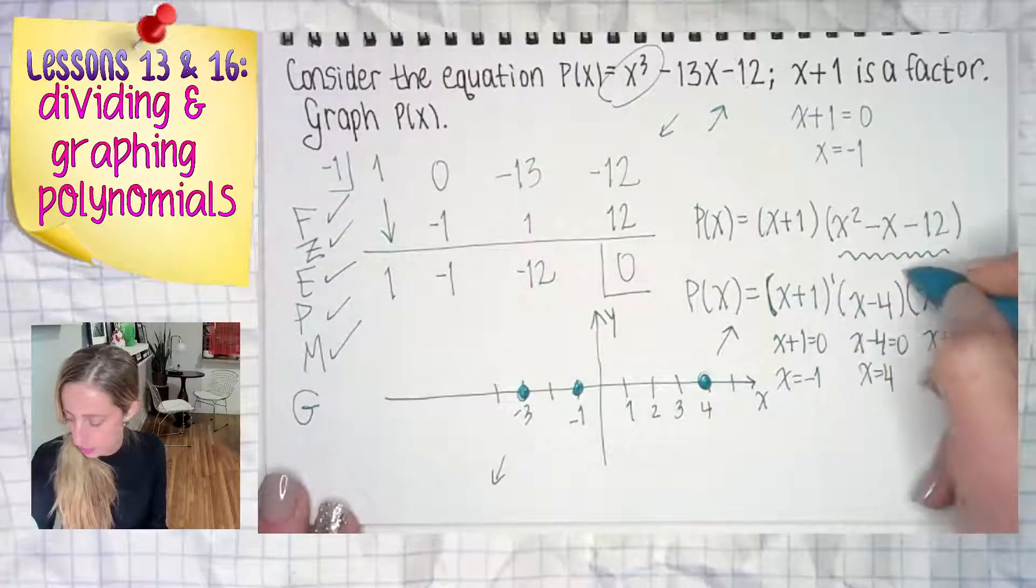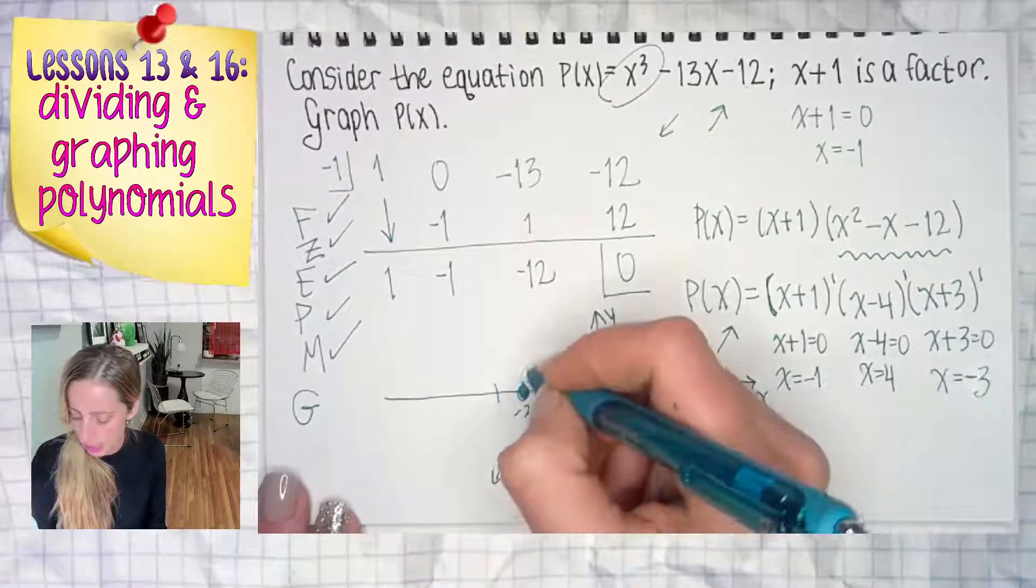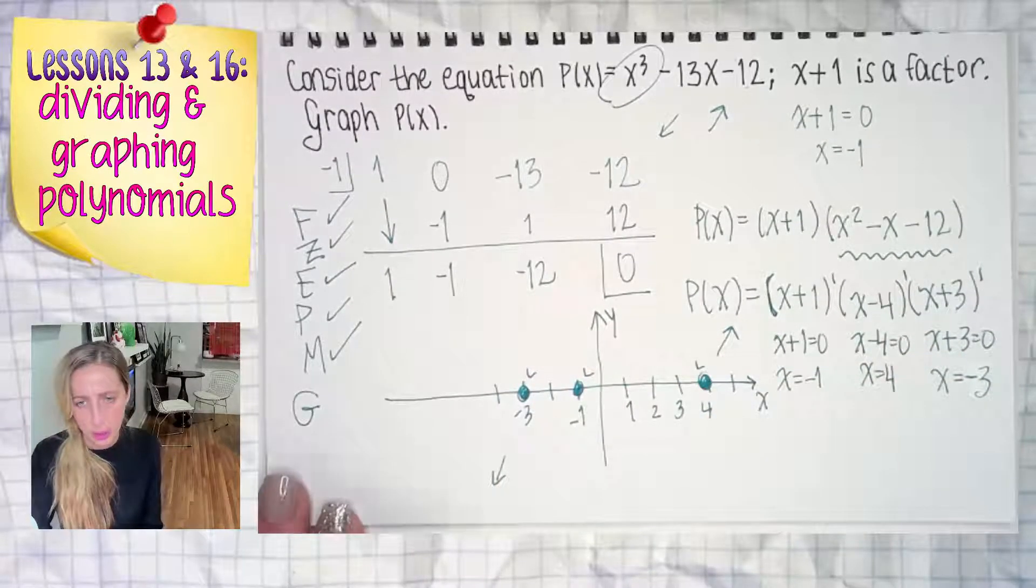Multiplicity. Well, lucky for us, they're all one. That means they all behave quite like a linear. They're going to cut through the x axis pretty straight.